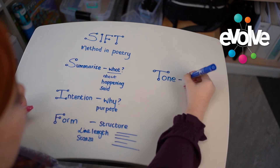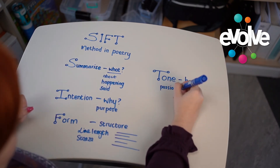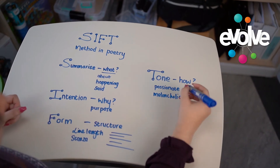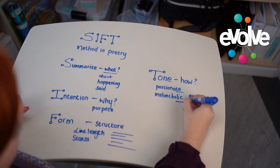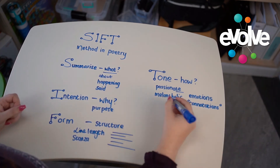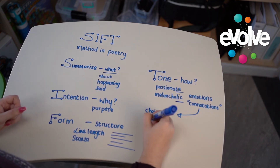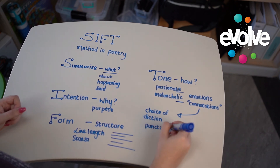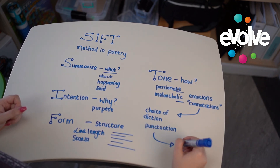The T stands for tone — how is it being said? Is it a passionate tone? Is it melancholic? We look at what is being said through the emotions, and when we examine the emotions within words, this is what we call connotations. This also links back to our choice of diction as well as our punctuation, which adds to the rest of the poem and in effect links us back to our theme.